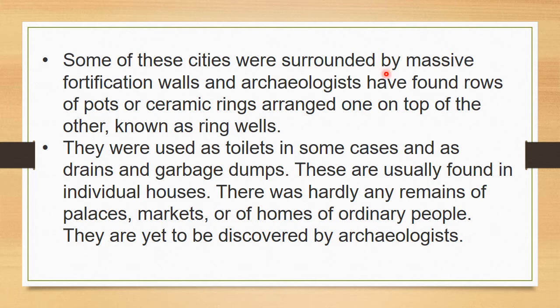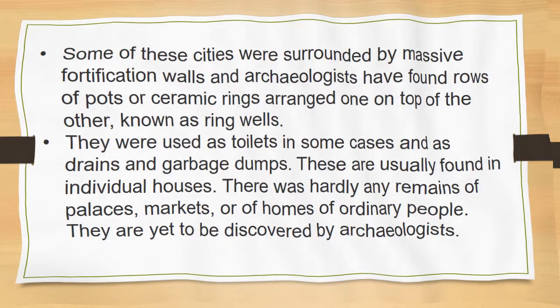Archaeologists found rows of pots or ceramic rings arranged one on top of the other, called ring wells. These were used as toilets in some cases, and as drains and garbage dumps in others. They are usually found in individual houses. There were hardly any remains of palaces, markets, or homes of ordinary people yet to be discovered.